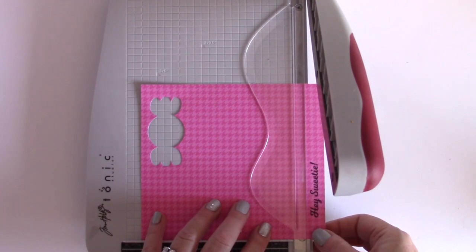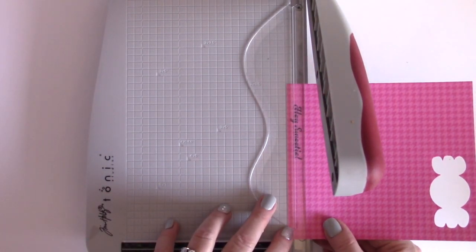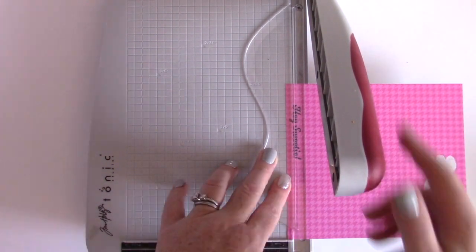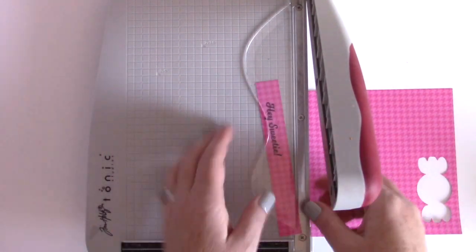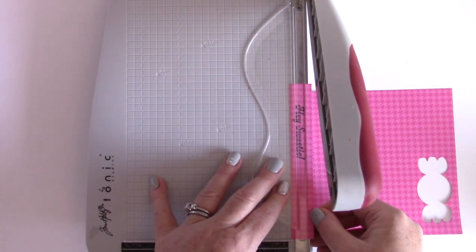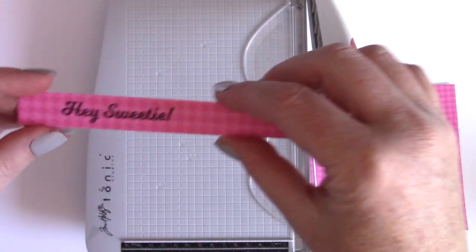Next I'm gonna pull out my Tim Holtz Tonic Studios guillotine trimmer. I'm gonna line up the top of the sentiment right on that clear barrier there. That's gonna give me... and then I decide I actually want a little bit more cut off, but pretty much that's gonna give me an even edge on the top and bottom which makes me super happy.